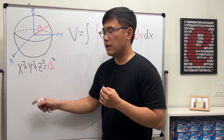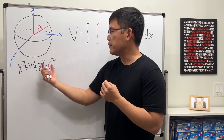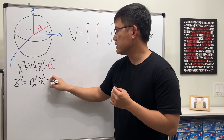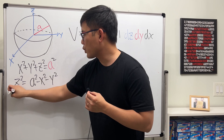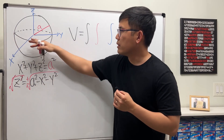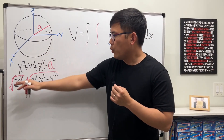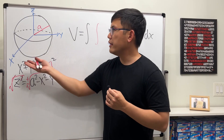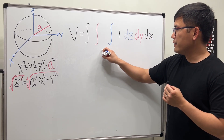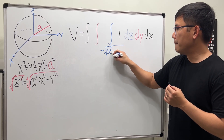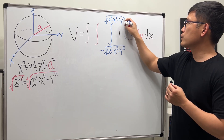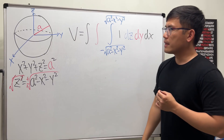Now we figure out the limits of integration, starting with z first. From the sphere equation, isolate z: z squared equals a squared minus x squared minus y squared. Taking square roots on both sides, and including plus or minus — the minus is the bottom portion underneath the xy-plane. So z goes from negative square root of (a squared minus x squared minus y squared) up to positive square root of (a squared minus x squared minus y squared).